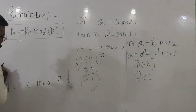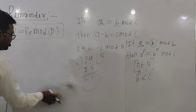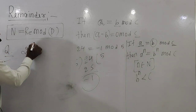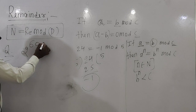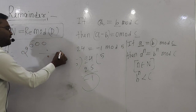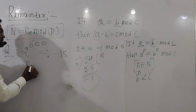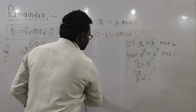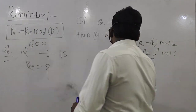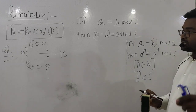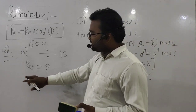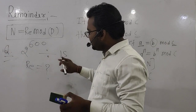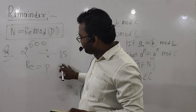Let's see what type of questions we can solve using this formula. Suppose the question is: what is the remainder when 2^600 is divided by 15? Concentrate for 10 minutes and the remainder concept will become very clear.